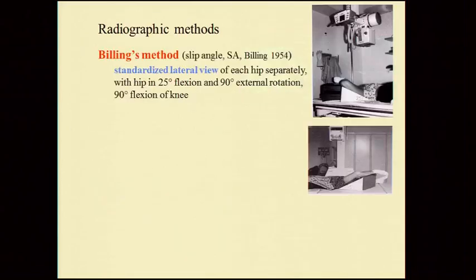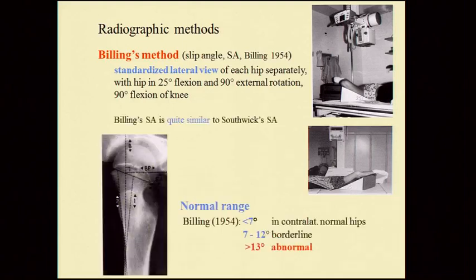Another radiographic method is Billing's method, described in 1954 — actually earlier than Southwick. It's used in Gothenburg and uses a standardized lateral view of each hip separately, with the hip in 25 degrees of flexion, 90 degrees external rotation, and 90 degrees of knee flexion. Billing's slip angle is quite similar to Southwick's angle. Billing himself described less than 7 degrees as normal, 7 to 12 degrees as borderline, and more than 13 degrees as abnormal.